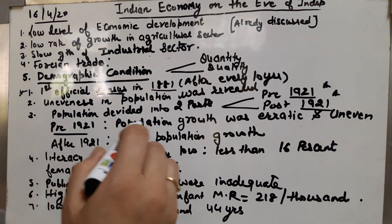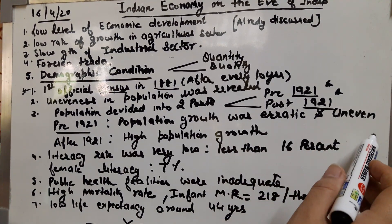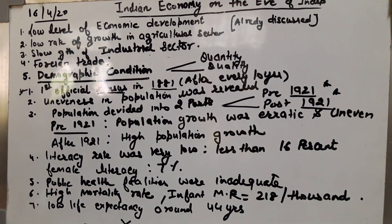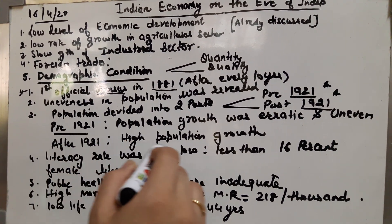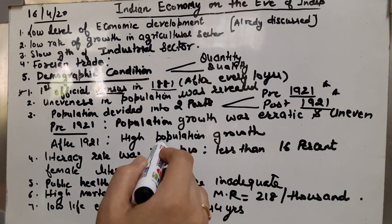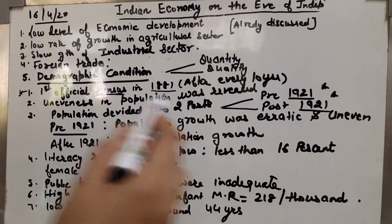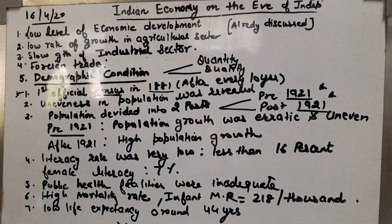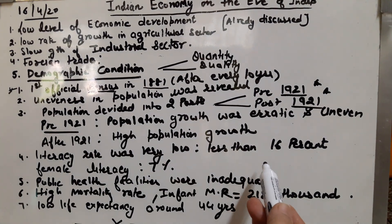Pre-1921 population growth was highly erratic and uneven — it was slowing down, then rising, with year-to-year variation observed. But after 1921, high and steadily rising population growth was observed. So the expected one-mark question here is: what is the importance of the year 1921? It divides the population into two parts — one is erratic, the other is a steady rise.